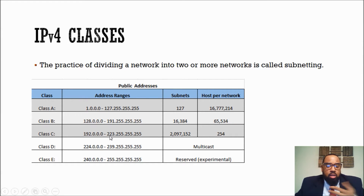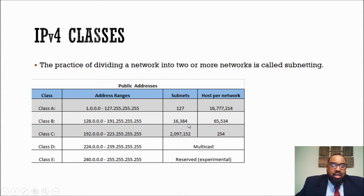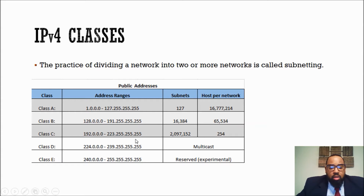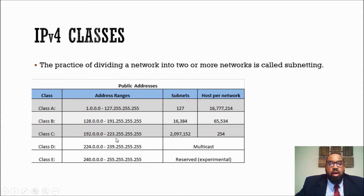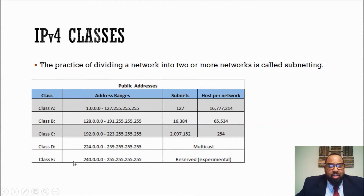Your class C is going to be more for your small organizations, ranging from 192 to 223.255.255.255. There are over 2 million subnets in class C, and each class C has 254 hosts. Now there are also class D and class E. Class D is the range 224 through 239 — it's a multicast range used when troubleshooting and configuring EIGRP, OSPF, Skype, things of that nature. And then 240 through 255 is reserved experimental — never seen it in use, but it's there.